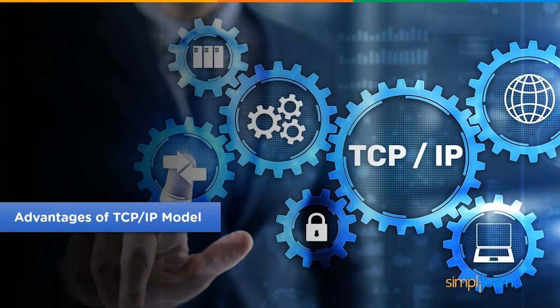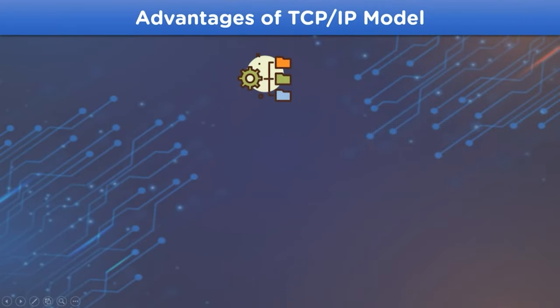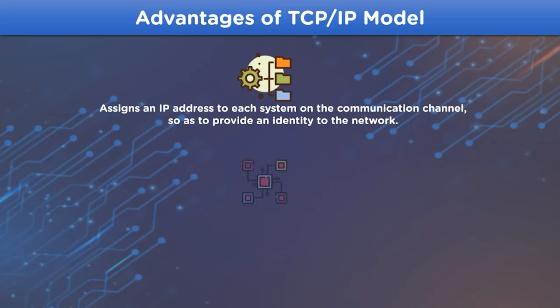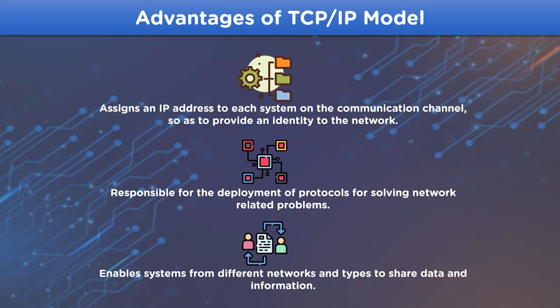Now let's look at the advantages of using the TCP/IP model. The TCP/IP model assigns an IP address to each system on the network channel so they can be identified on the internet. It is also responsible for enacting different protocols on the data to be transmitted over the communication channel, and enables users and systems to access different formats of data over the communication channel.